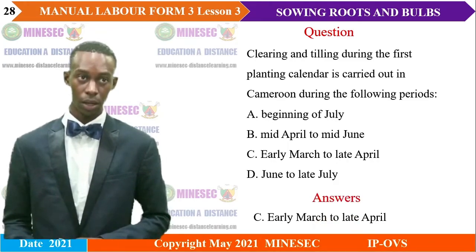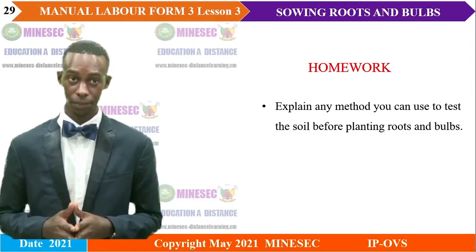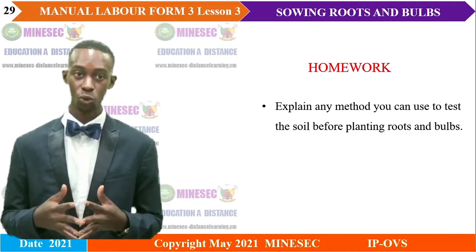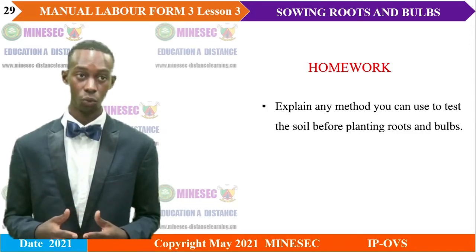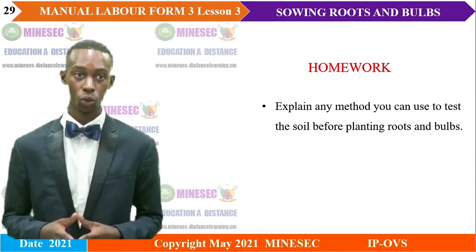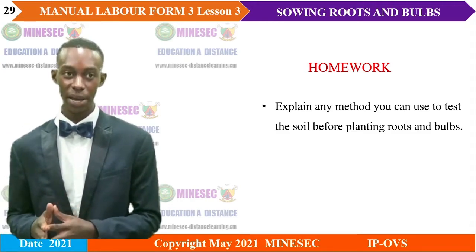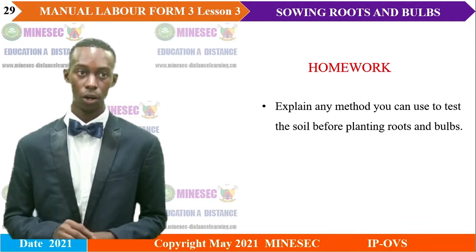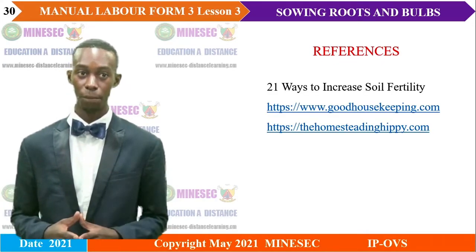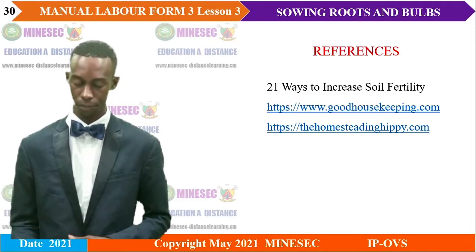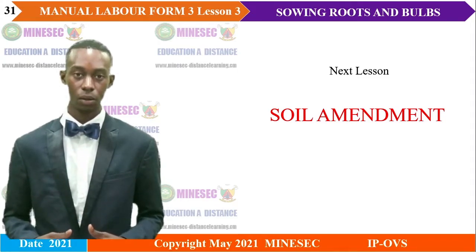The next question is a homework — a take-home assignment each and every one of you must answer using knowledge newly acquired. Next class we will do the correction. It reads: explain any method you can use to test the soil before planting roots and bulbs. The reference provided will help you do some research to further understand the lesson. We have come to the end of our lesson. In our next lesson, we will be looking at soil amendment. See you next lesson.